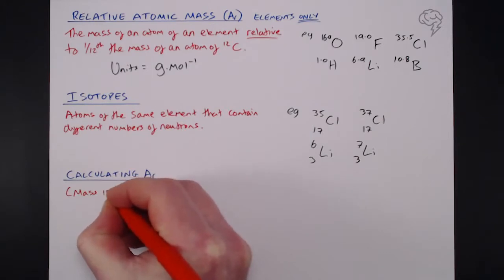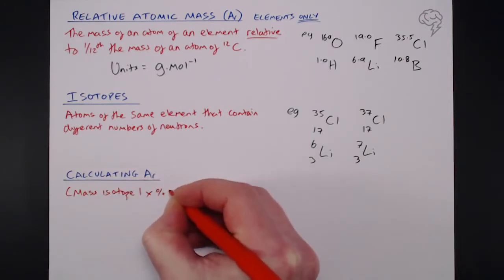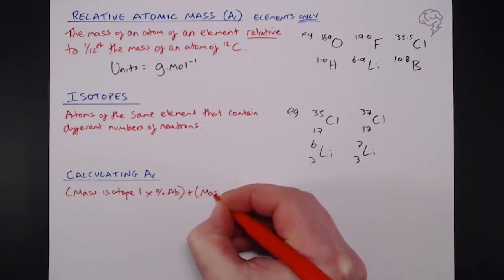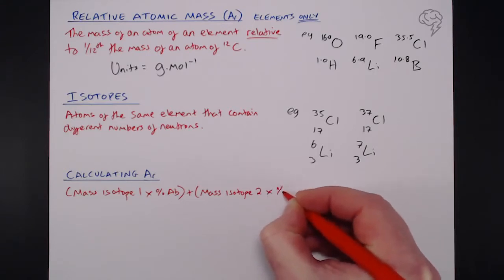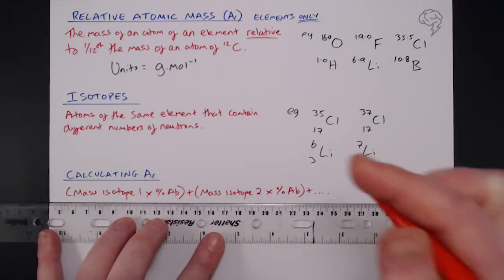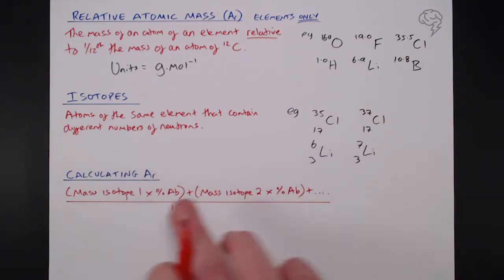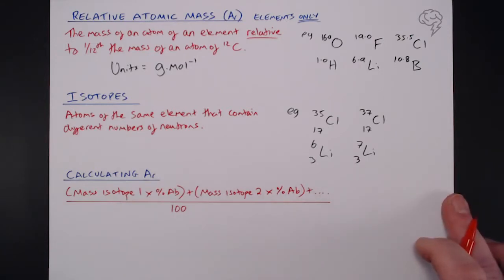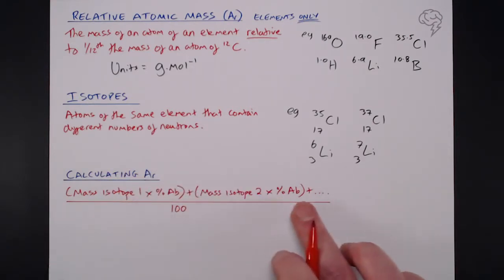But how do we actually calculate it? So, what we do is we take the mass of the first isotope, multiply that by its percentage abundance, which you'll likely be given in an exam question. Add that to the mass of isotope 2, multiply it by its percentage abundance, and then keep repeating this process until you've used all the available isotopes that you're given. So if it's 3 or 4, you'll have 3 or 4 of these on the top line of your equation. Of course, once we've done that, we need to divide everything by 100, because all of these are percentage abundances.